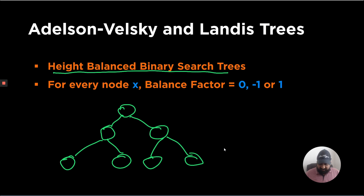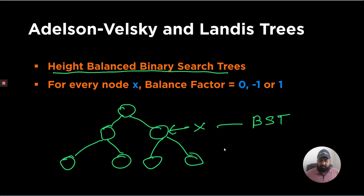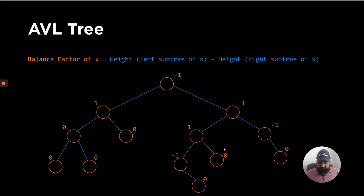For every node x in the tree, two different properties must hold. The first one is that it is a BST — each node follows the BST properties. The second one is that the balance factor is 0, -1, or 1. The balance factor of node x is the height of the left subtree minus the height of the right subtree of x.